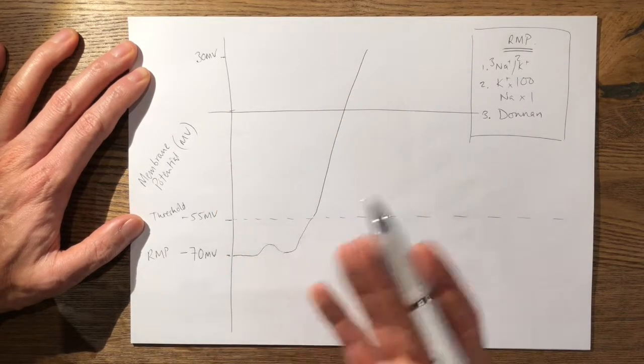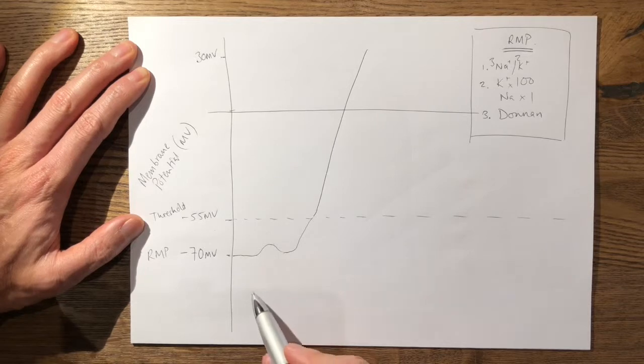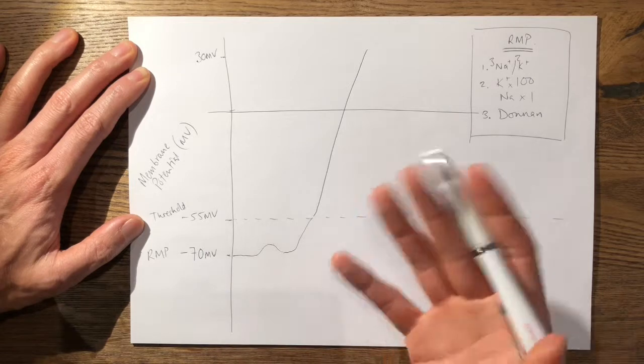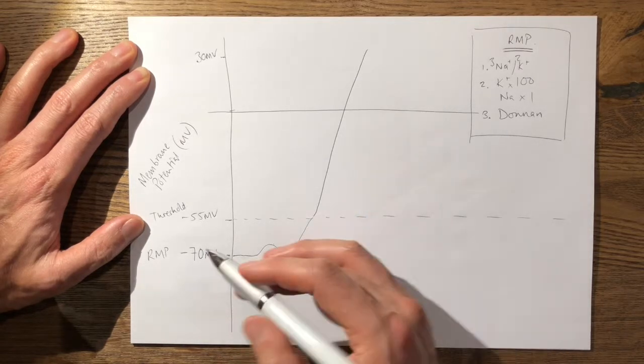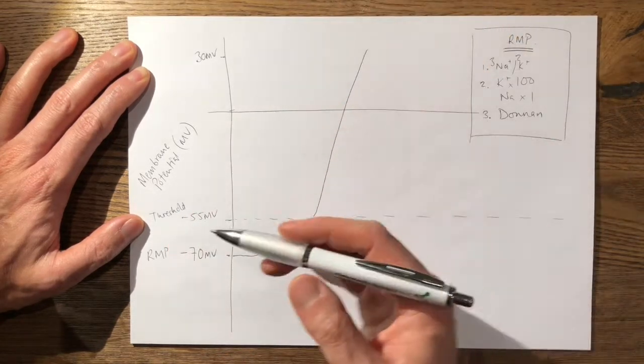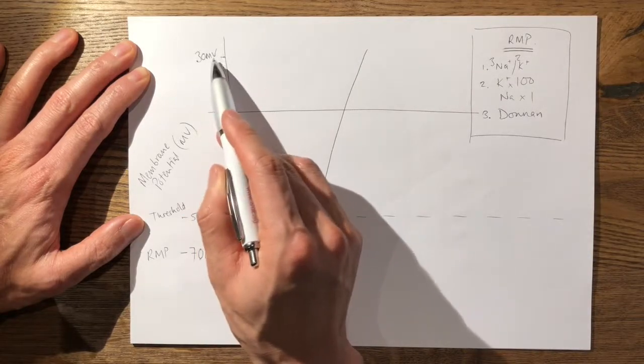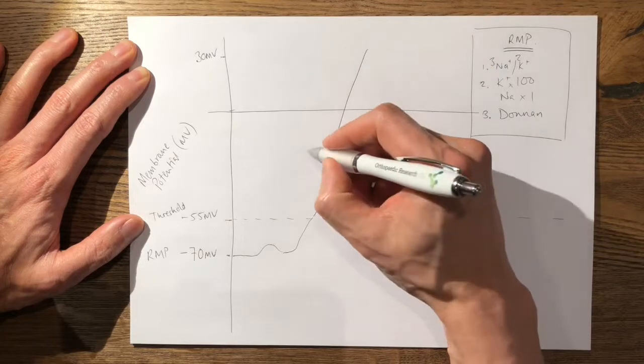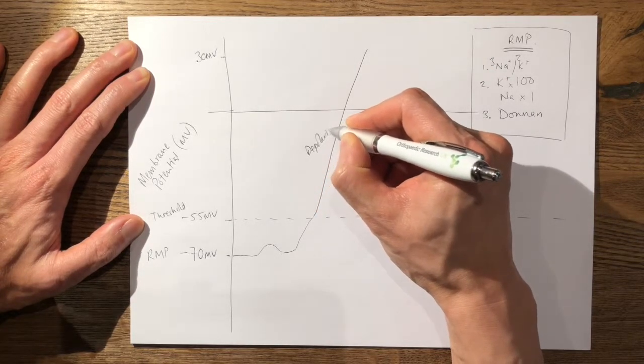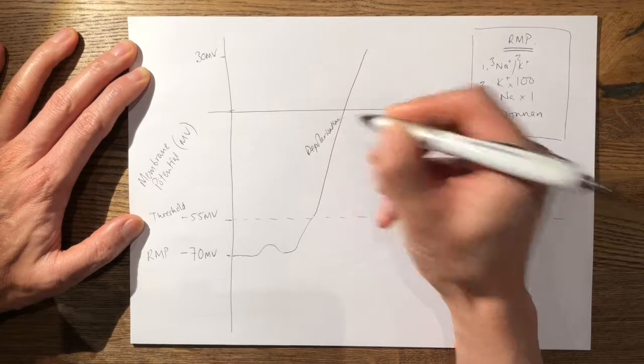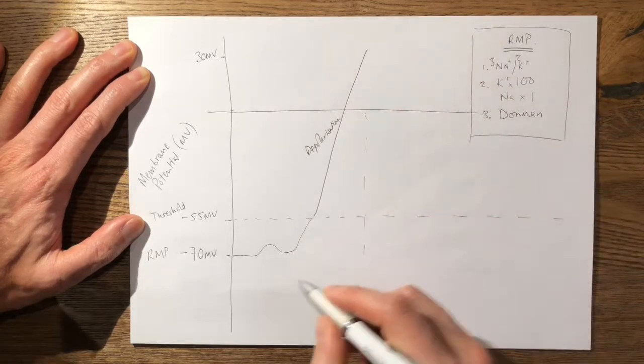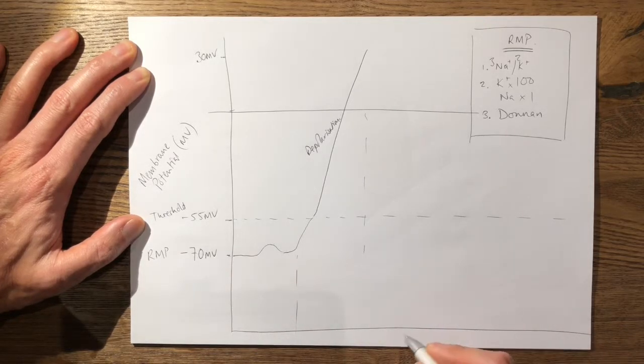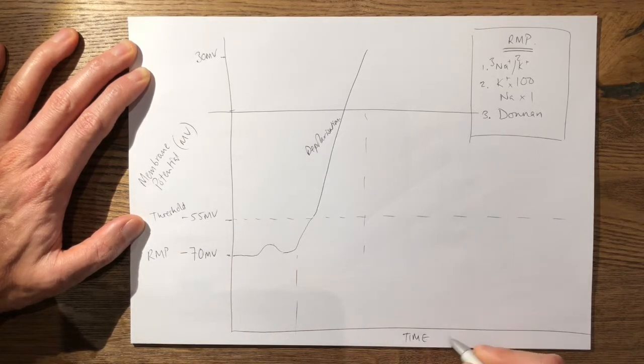When you get the opening of the sodium-gated channels, you get a massive influx of sodium and therefore you have a sudden rise in the positivity of the membrane potential, which is your depolarization here. This takes approximately one millisecond. So this is time on the x-axis and this is measured in milliseconds.